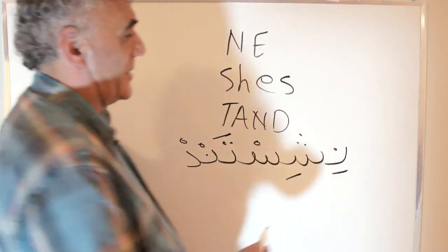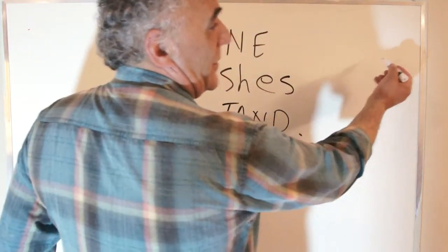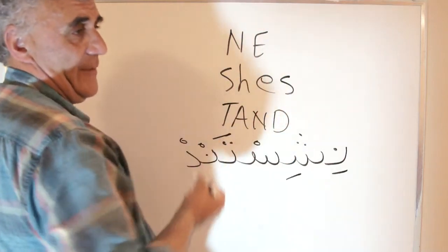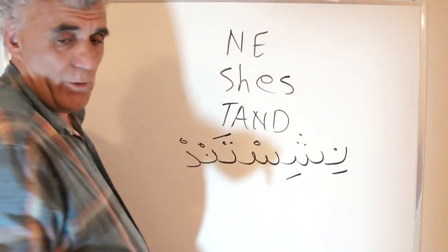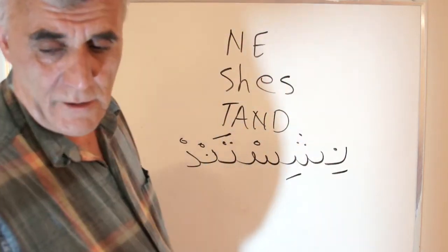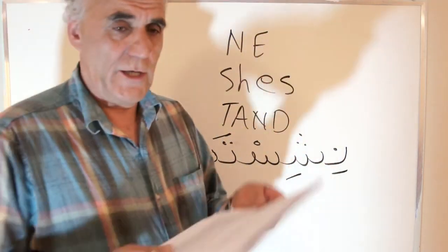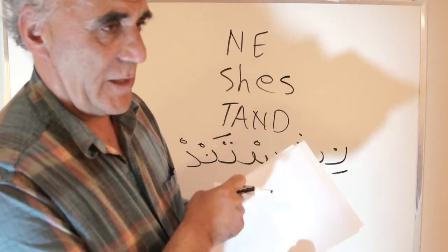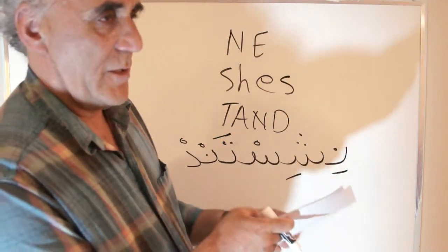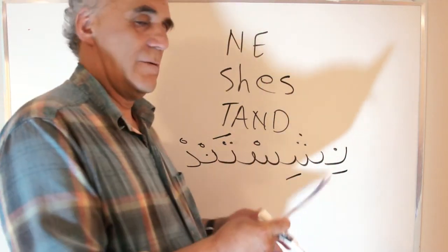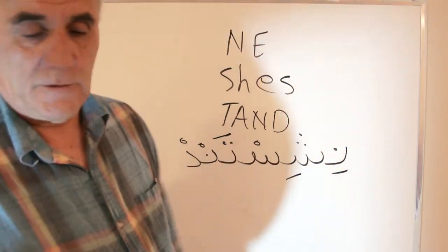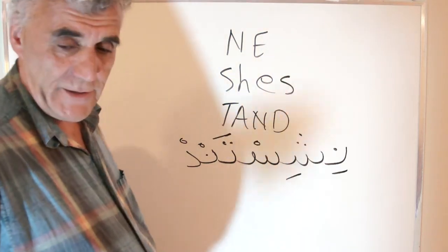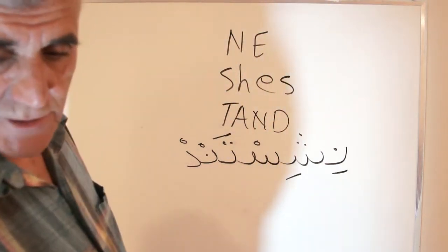There's another very important point: Persian is written right to left. You look at the book from the end — we start from what English readers would call the back of the book.